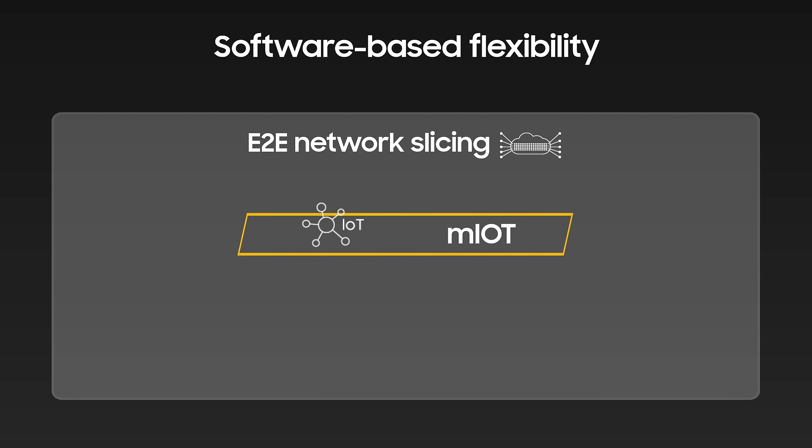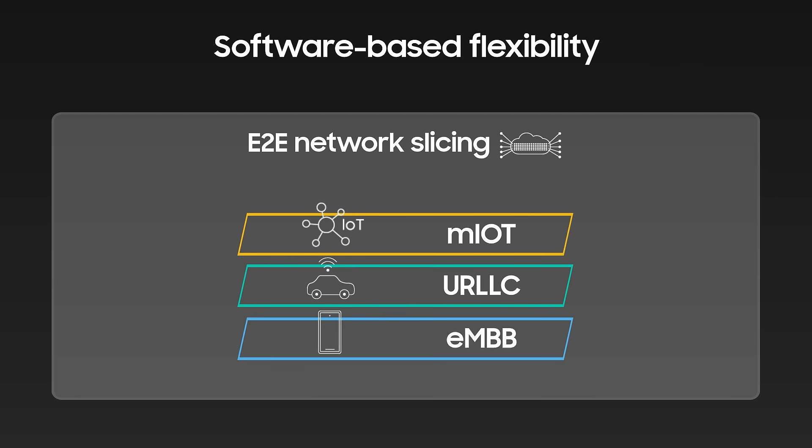Network slicing allows operators to provide different network capabilities and services to specific users using the same physical infrastructure. Each network slice comes with its own service and performance requirements, providing operators a powerful way to differentiate their offering to enterprises and consumers and further monetize their network. Samsung's V-RAN can efficiently allocate network functions and radio resources for each separate service on a personalized basis.